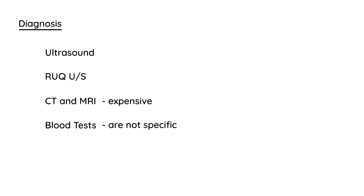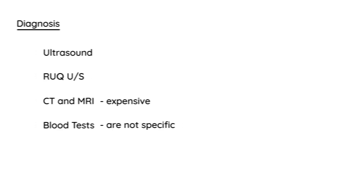When you suspect pathology in the gallbladder, the diagnosis is almost always a right upper quadrant ultrasound because it is cheap and fast. CT and MRI are far too expensive for initial tests, and blood tests are not very specific in this condition.